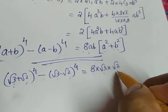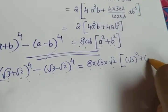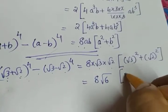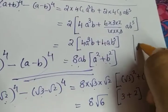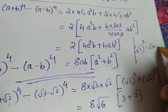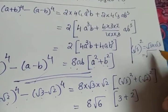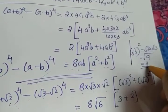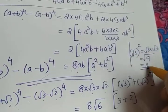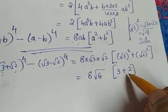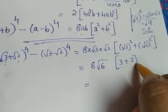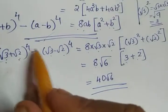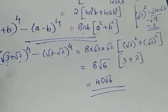Substituting: 8ab becomes 8 × √3 × √2 = 8√6, and (a² + b²) becomes (√3)² + (√2)² = 3 + 2 = 5. The square of a square root of any number is that number itself — √3 squared is 3, √2 squared is 2. So 3 + 2 = 5, and 5 × 8 = 40. Therefore (√3 + √2)⁴ − (√3 − √2)⁴ = 40√6.